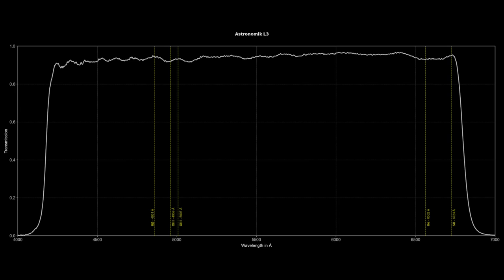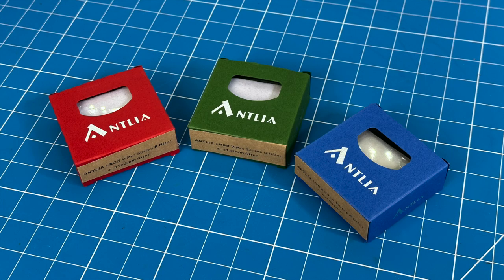If you own a reflector or if you have a perfectly color-corrected refractor, like one from Takahashi, you definitely want a luminance filter that has a wider bandpass, all the way down to 400 nanometers, to maximize the amount of light you collect in your luminance frames. Astronomic also sells the L2 or L1 luminance filters, and they have a slightly wider bandwidth. Next, let's look at a few sets of RGB filters.